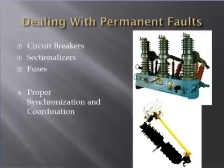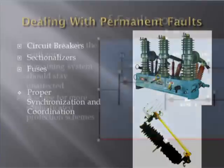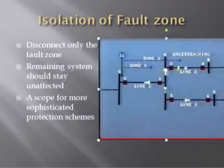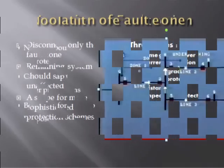In case of a more permanent fault, we need to isolate the fault zone completely until the fault has been cleared. Devices like circuit breakers, sectionalizers, and fuses are used for this purpose. But different lines contain different amounts of power. For a fault at a point lower in the power system hierarchy, only that local portion should be isolated. The remaining power system should keep operating normally. Hence, there is a scope for a sophisticated power protection system which can cater for such requirements.